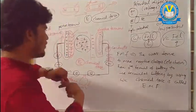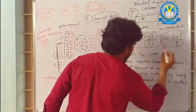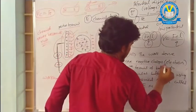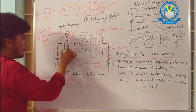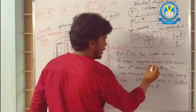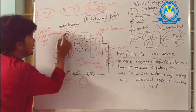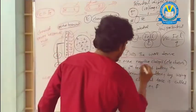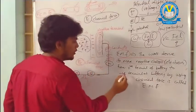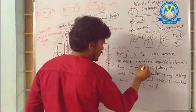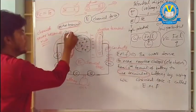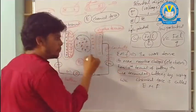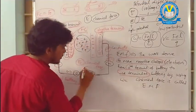Electromotive force can be defined as the work done to move negative charges. These negative charges — shown here in red — need to move from the positive pole of the battery to the negative terminal of the battery. The journey is between the positive terminal and the negative terminal, and this movement happens by applying some chemical force.